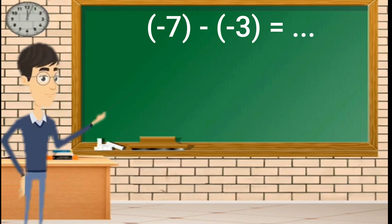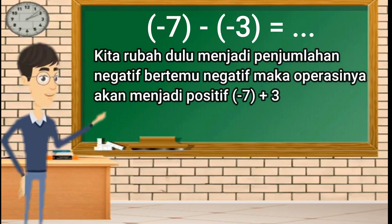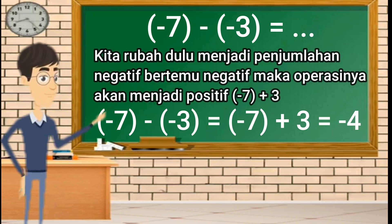Negatif 7 dikurangi negatif 3. Seperti sebelumnya, kita ubah dulu menjadi penjumlahan. Negatif bertemu negatif maka operasinya akan menjadi positif. Negatif 7 dikurangi negatif 3 sama dengan negatif 7 ditambah 3. Karena dalam penjumlahan negatif 7 lebih besar daripada angka 3, maka hasilnya adalah negatif 4.